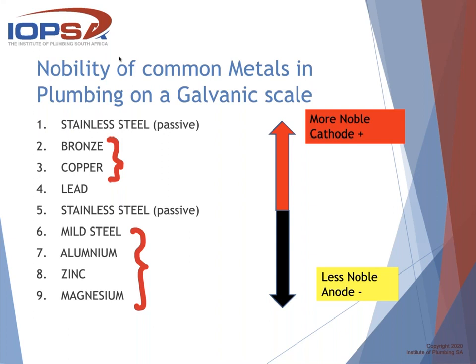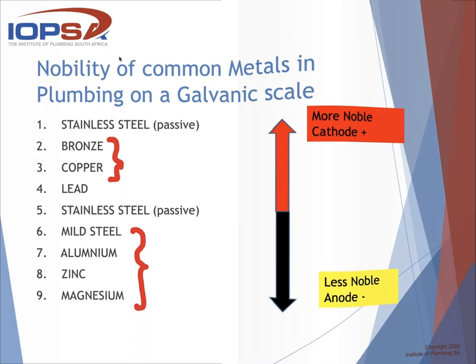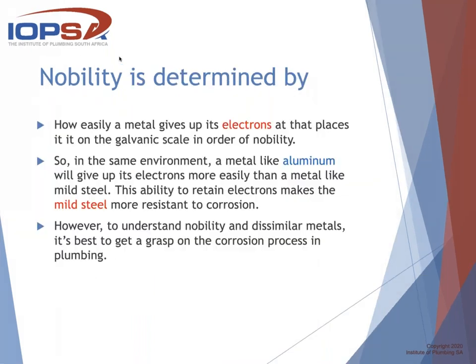If we look at a geyser, for instance, mild steel is at number six — that is why we use aluminium or magnesium alloys as anodes. Nobility is determined by how easily a metal gives up its electrons, placing it on the galvanic scale in order of nobility. In the same environment, aluminium gives up its electrons more easily than mild steel, making mild steel more resistant to corrosion. To understand nobility and dissimilar metals, it's best to grasp the corrosion process in plumbing.